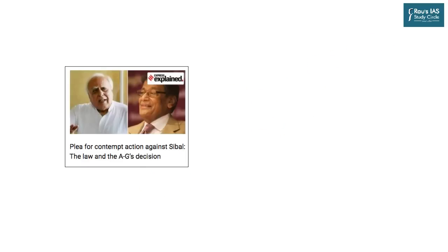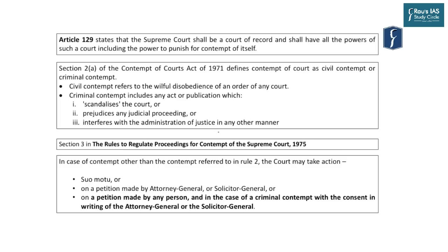There is an explained article about a plea for contempt of court action against Kapil Sibal — but that request was denied by the Attorney General, as the AG's permission is required in case of criminal contempt of court proceedings. Under Article 129 of the Indian Constitution, the Supreme Court shall be a court of record and shall have all powers of such a court — meaning it has the power to punish for contempt of itself.